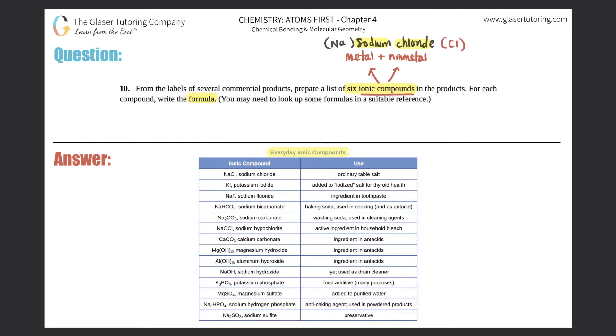I think this is more beneficial for you guys than trying to look at the commercial products around your house. For this question, they want you to just give the compound with the appropriate formula. For example, the one I just gave, sodium chloride, would just be NaCl.